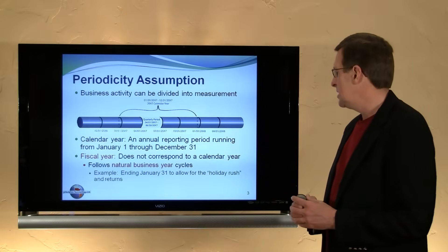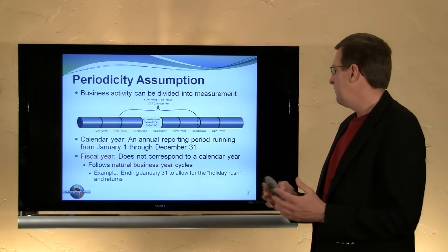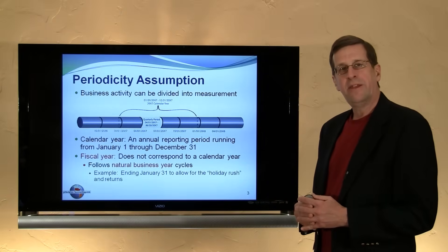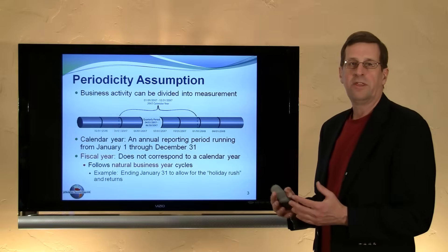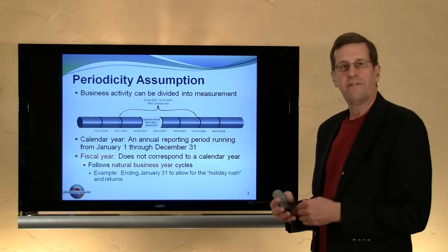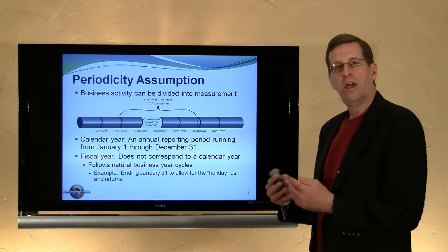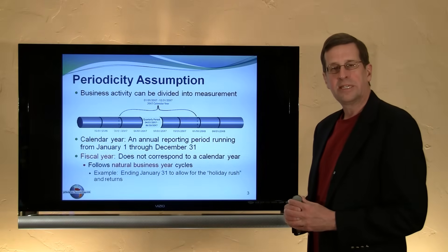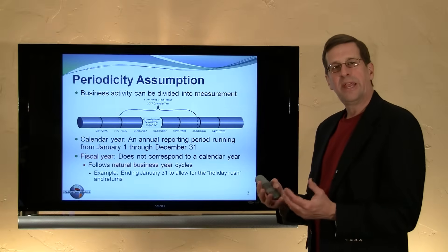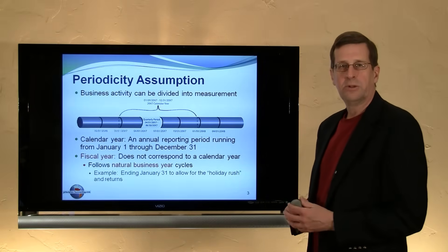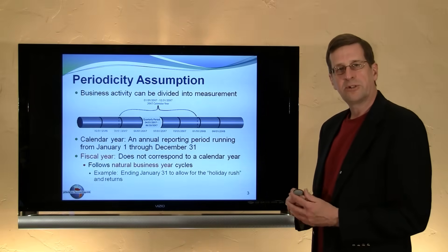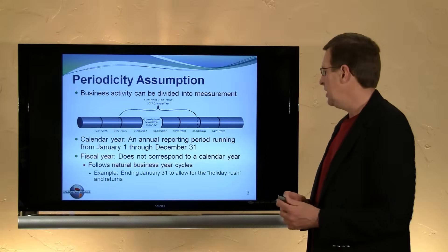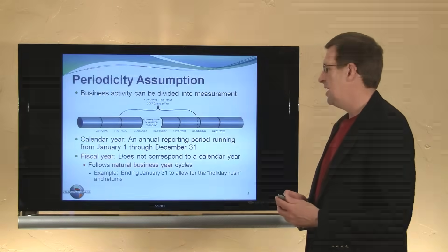A fiscal year may follow a natural business cycle. For example, retailers often end their year on January 31, so they have a February 1 through January 31 business cycle, allowing them to capture holiday sales and returns to get a complete picture of the accounting activity for that particular cycle of time.